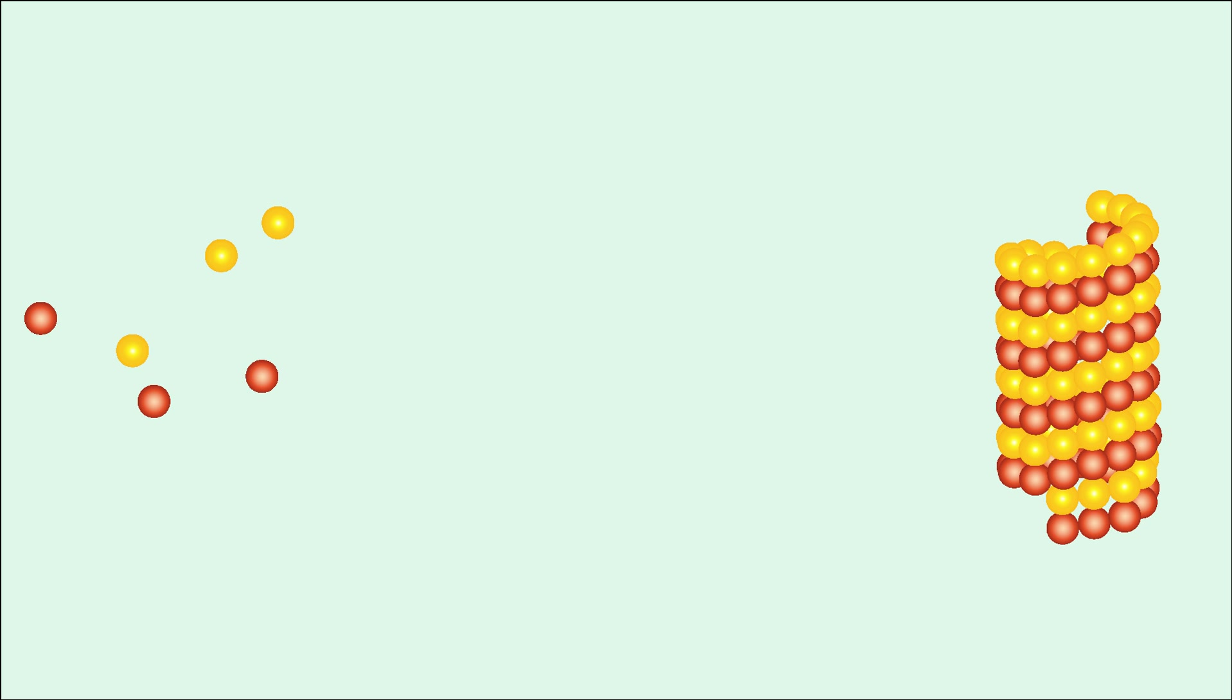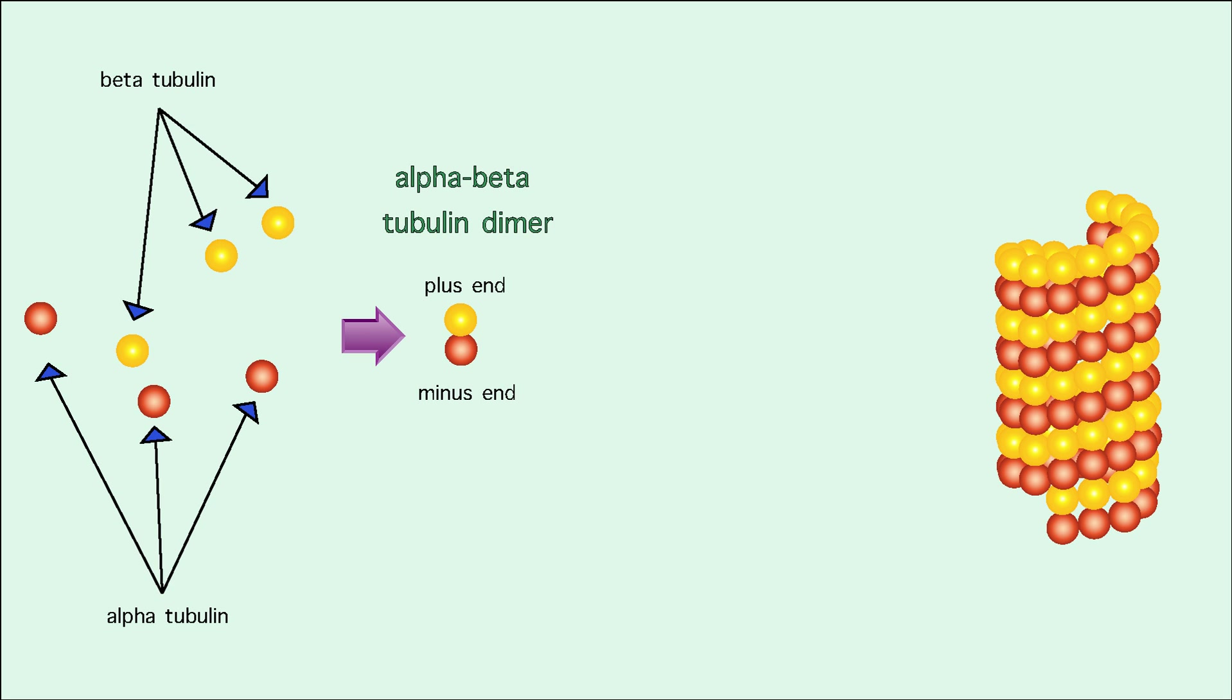They're composed of two different tubulin monomers called alpha and beta tubulin. Microtubules will self-assemble in vitro. Assembly begins when these two monomers bind together to form a dimer.